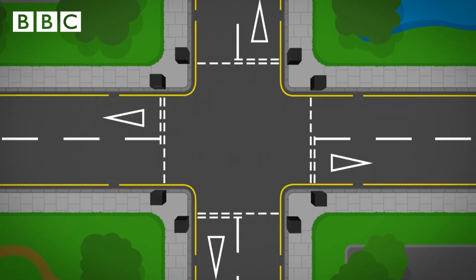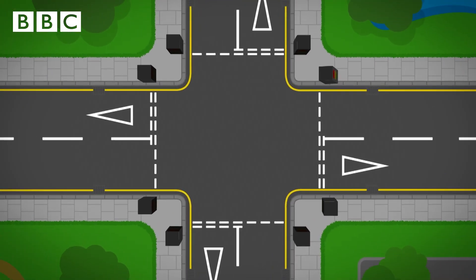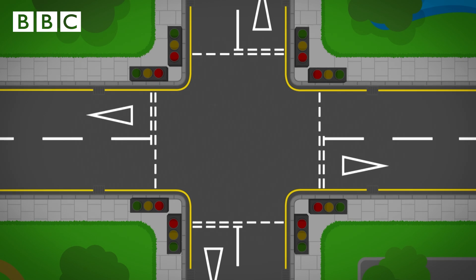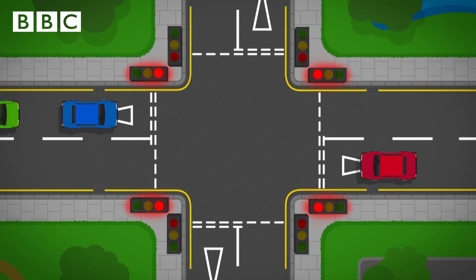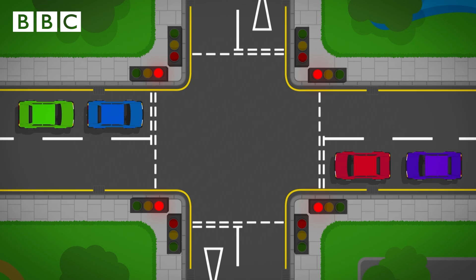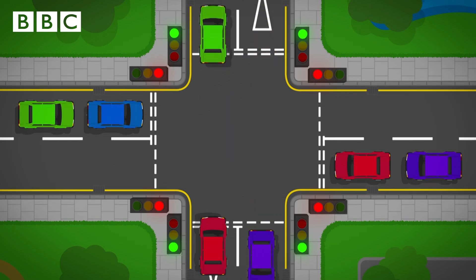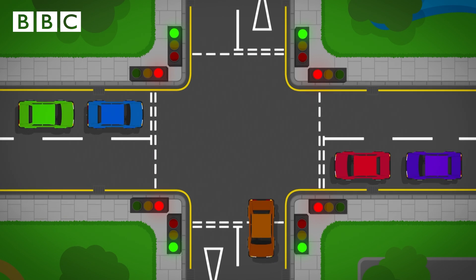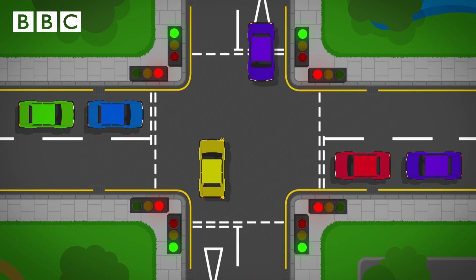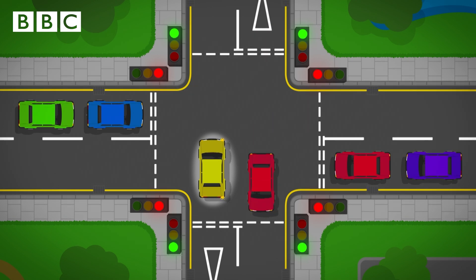At a junction there is a set of traffic lights for each road. The roads coming from the left and right see a red light so they have to wait. Traffic coming from the top and bottom roads see a green light at the same time, which means it's safe for them to go. The traffic can go straight ahead or turn left. It can also turn right but it has to wait until the traffic coming in the opposite direction has passed and it's safe to turn.